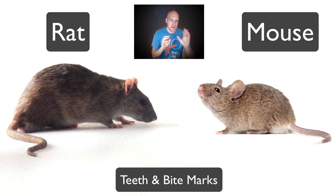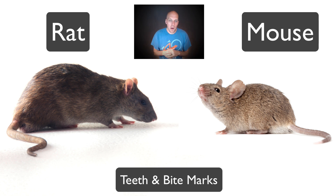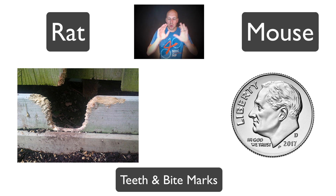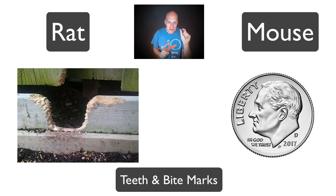As far as teeth, that will give you indicators of whether you might have a mouse or a rat. Both like to gnaw with their front incisors and have the same number of teeth. But rats leave a distinguishably larger bite mark, while a mouse might leave a more perfect circular bite mark about the size of a dime. So if you're seeing dime-sized, very circular bite marks, that's a mouse; something much larger points to a rat.